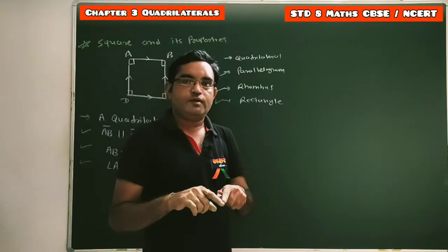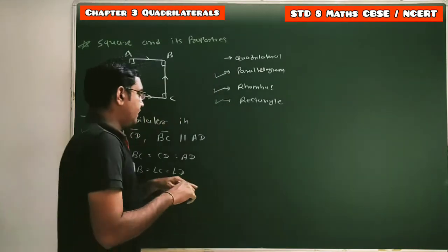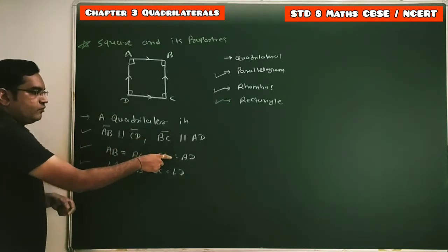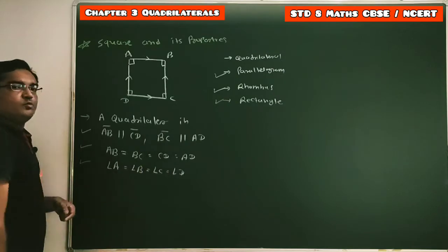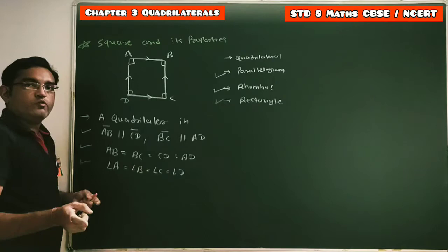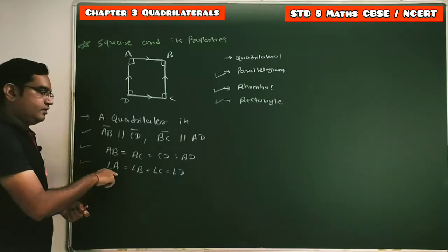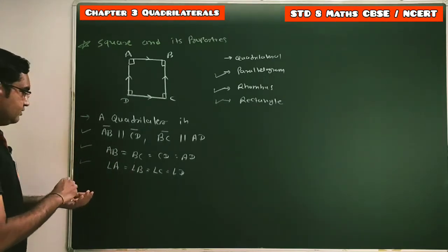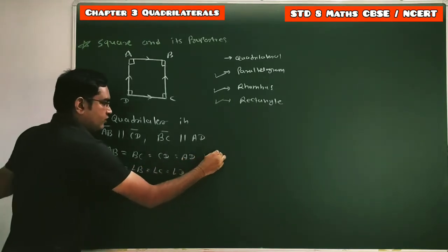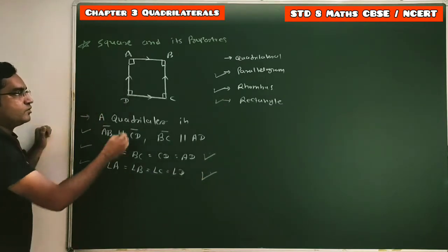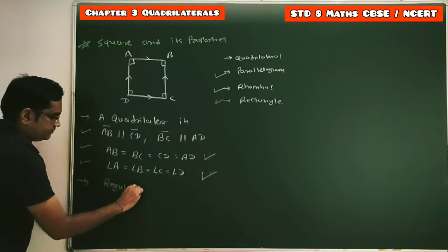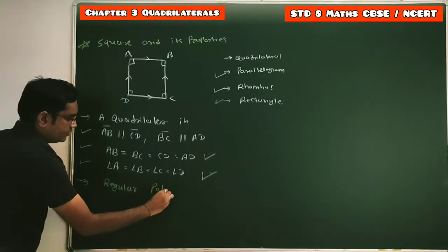A quadrilateral in which both pairs of opposite sides are parallel, all four sides are equal, and all four angles are equal is said to be a square. A parallelogram in which all four sides are equal and all four angles are equal is a square. A rectangle in which all four sides are equal is a square. In a square all four sides are equal and four angles are equal, so it is a regular polygon.